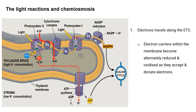We can label the regions in this diagram. This region is the stroma, and the space within the thylakoid is known as the thylakoid space or thylakoid lumen. We can see that within the thylakoid space there is a high concentration of hydrogen ions compared to the stroma.